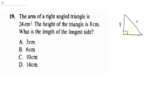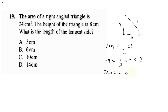Since we know the area, the area formula is half times base times height. So 24 equals half times b times 8. This gives 24 times 2 equals b times 8, and b equals 24 times 2 divided by 8. Simplifying, b equals 6.